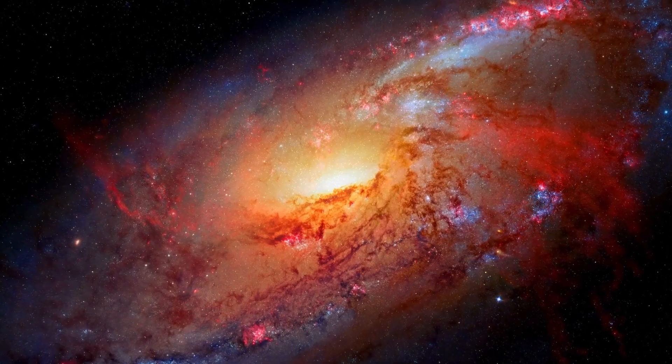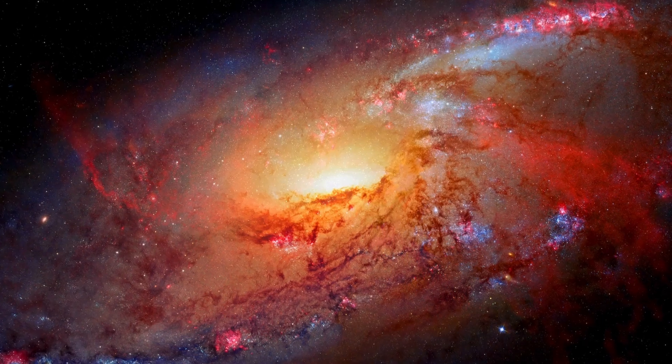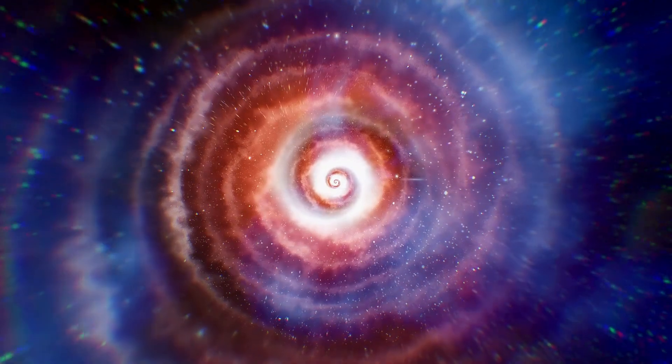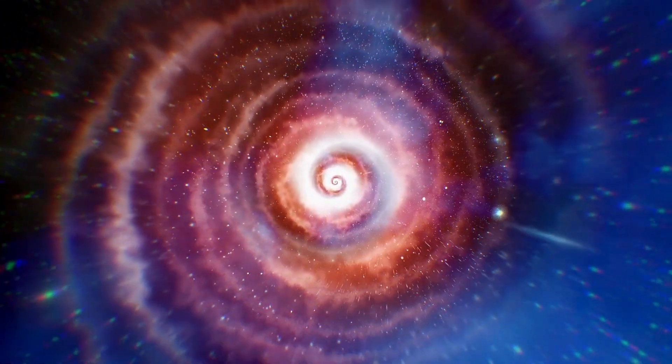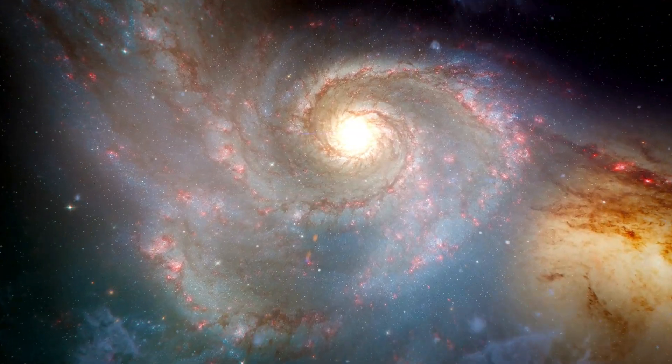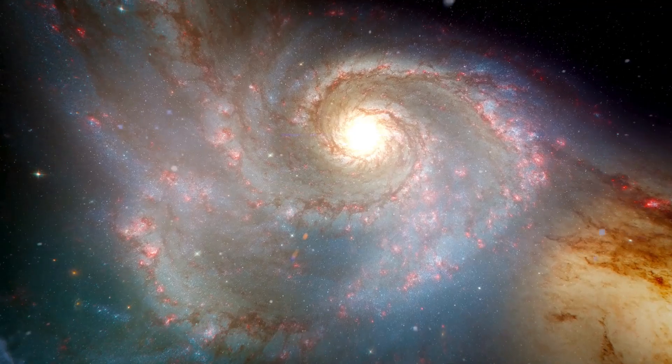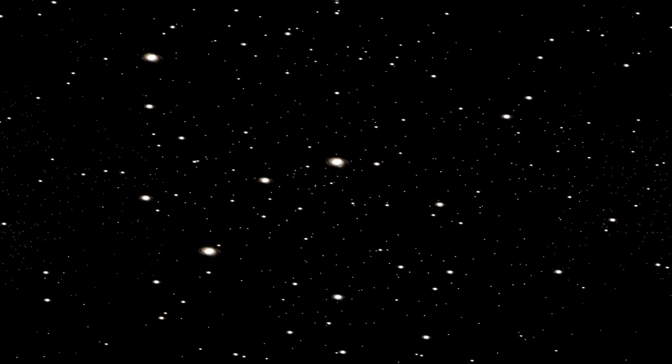The enigma deepens when we ponder the symmetry of the laws of physics governing our universe, which seem to treat matter and antimatter equally. Yet, upon observation, we find that the stars and galaxies we see are predominantly made of matter, with antimatter scarcely present. This leads us to ponder the intricate forces that orchestrated the asymmetry, giving rise to the world as we perceive it. What profound mechanisms tipped the balance, granting us a universe teeming with galaxies, stars, and the mystery of our own existence?